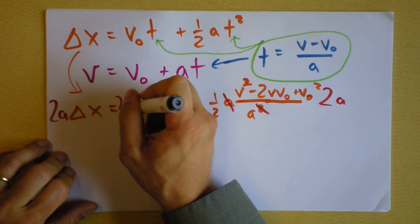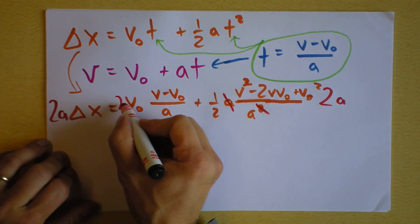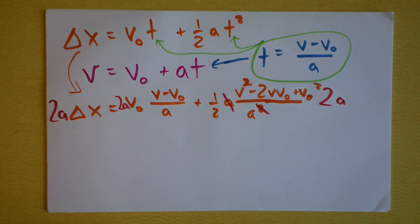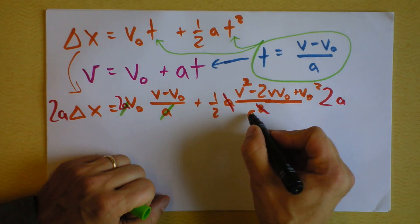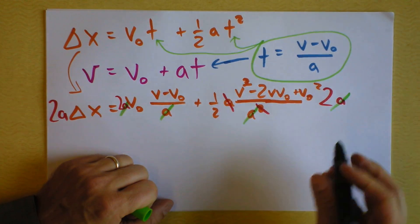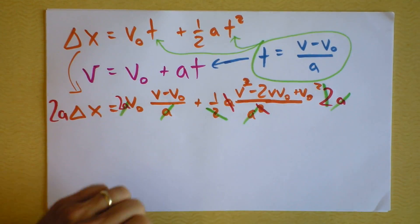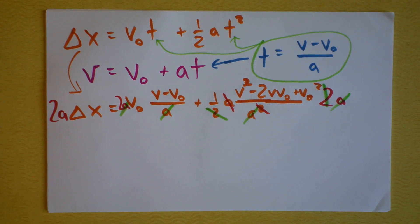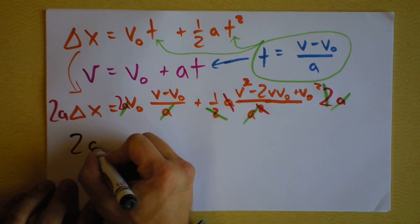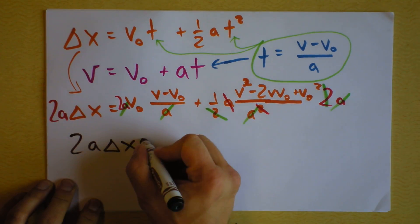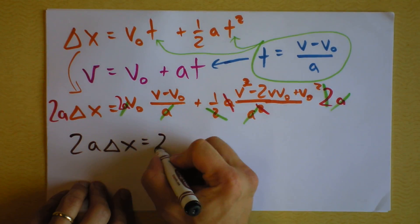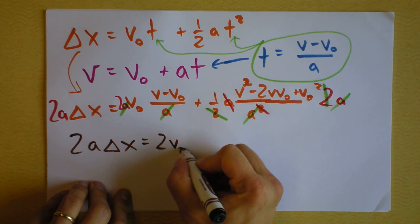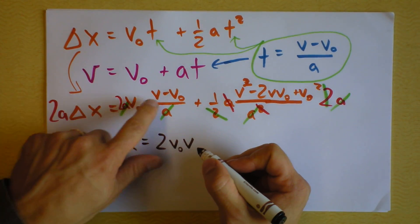All right. So, this a right here... Let's cancel some a's. That a cancels that a. And this a that's left in the denominator cancels that a right there. And that 2 is canceled by that 2 right there. Now, on my next line, I get 2 times a times Δx equals... What's left over here? 2v v-naught. 2v-naught v. That's the order there, v-naught v. I'll try not to be confusing.